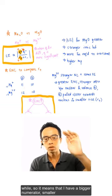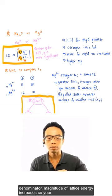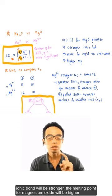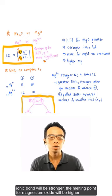So it means that I have a bigger numerator, smaller denominator, magnitude of lattice energy increases, so the ionic bond will be stronger and the melting point for Mg2+ will be higher.